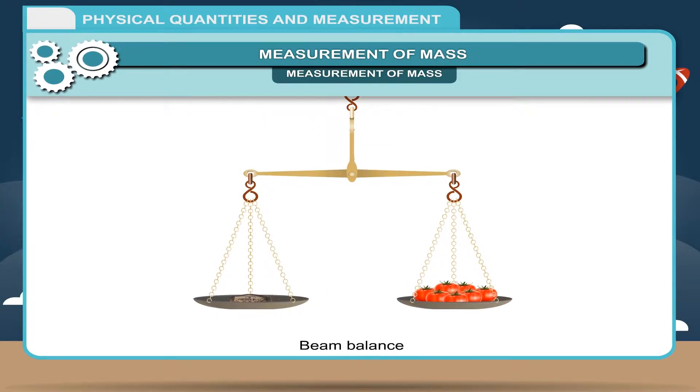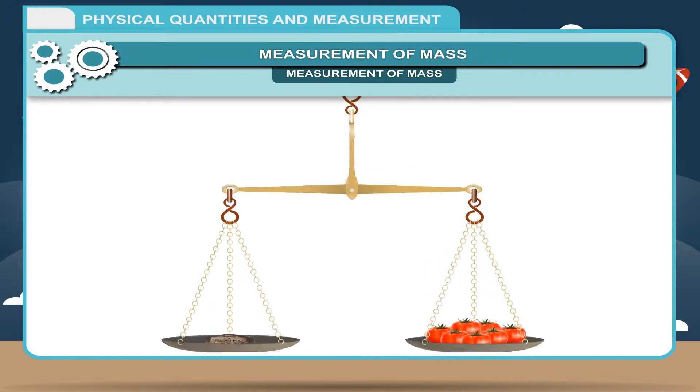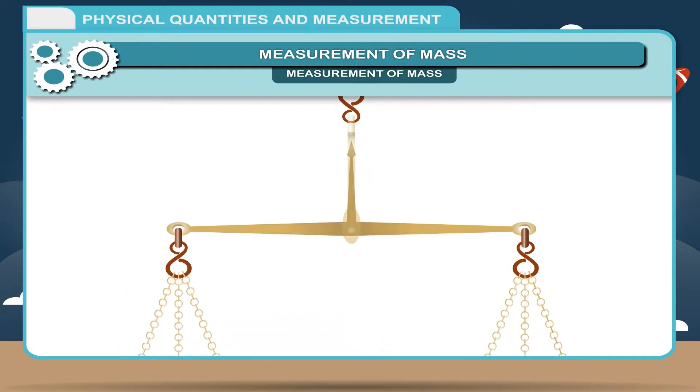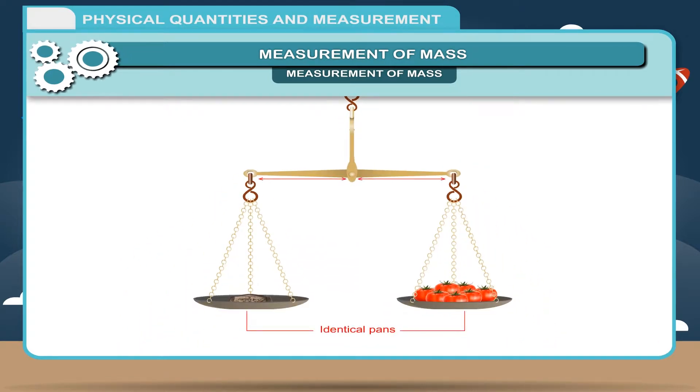The beam balance is used to measure the mass. It has a long beam having a support at the center and two identical pans suspended at equal distances from the center of the beam.